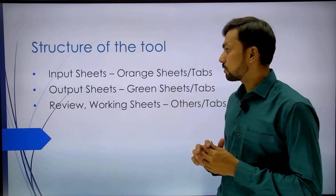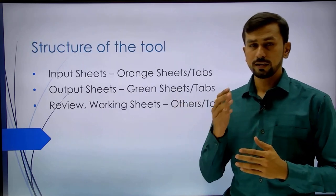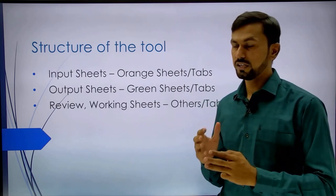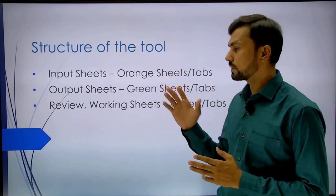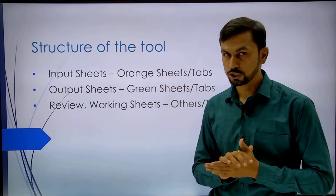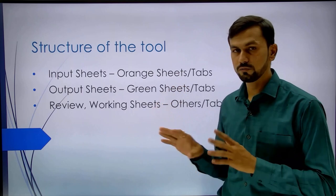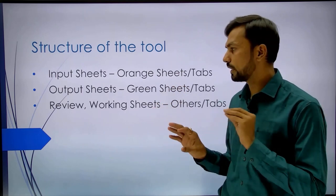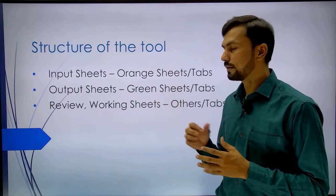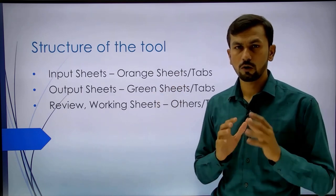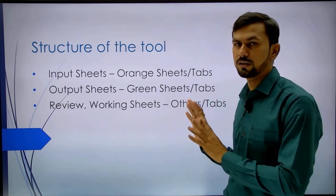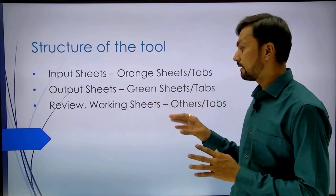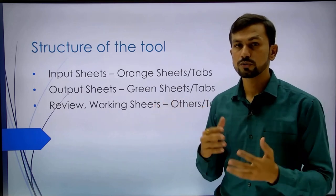Let us look at the structure of the tool. All things are divided into three kinds of sheets. The first is the input sheet, colored orange. There are five input sheets. Then there are output sheets, colored as green tabs. Finally, there are certain review and working sheets.